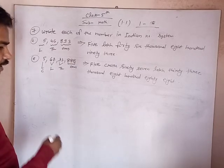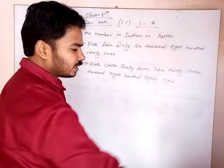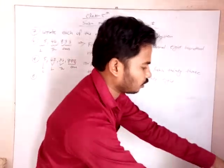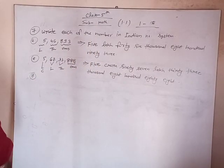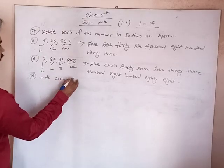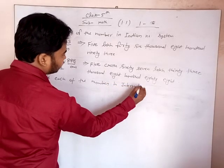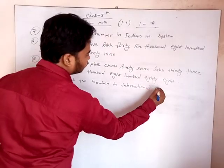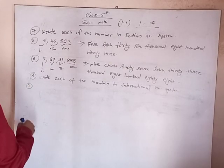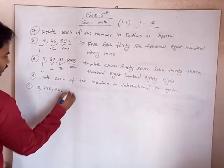And in question number 8: write each of the following numbers in words using the international place value system. Suppose we take question number 8 with the number 3,786,560.